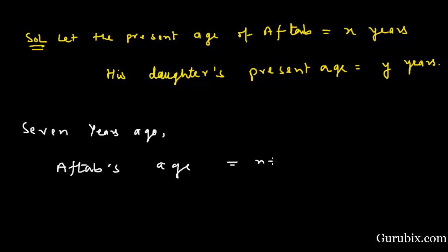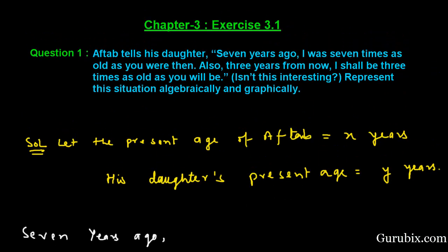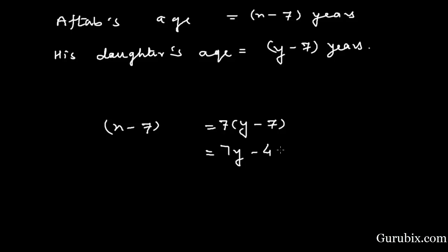Seven years ago, Aftab's age will be x minus 7 years, and his daughter's age would be y minus 7 years. The condition given is: I was seven times as old as you were then. So we form the equation: x minus 7 equals 7 times (y minus 7), which gives x minus 7y equals minus 42. This is our Equation 1.